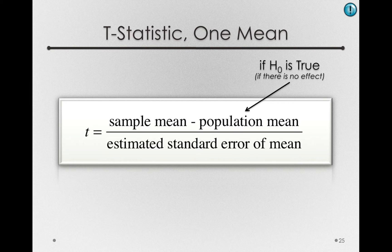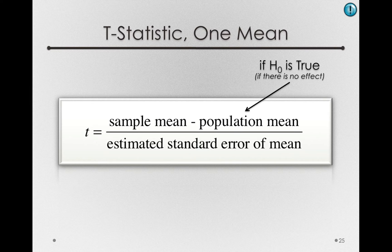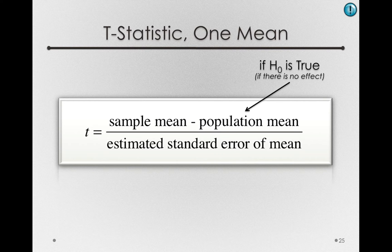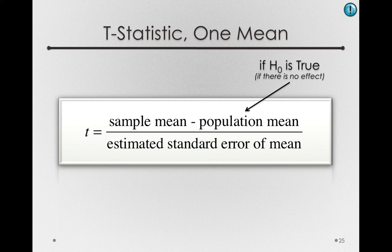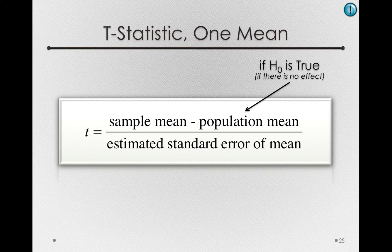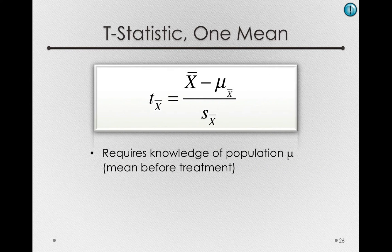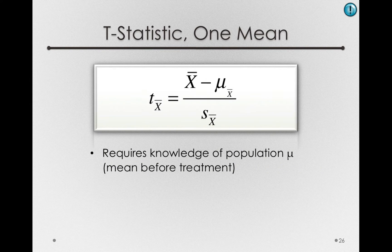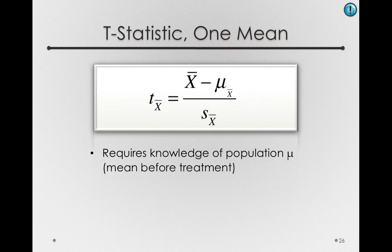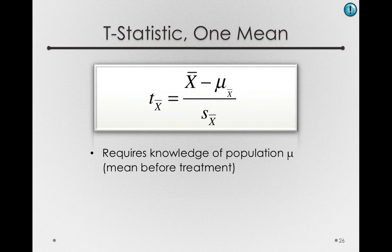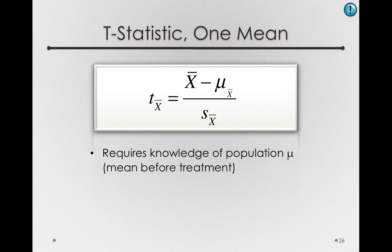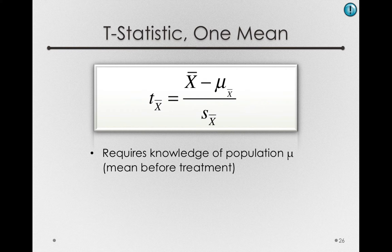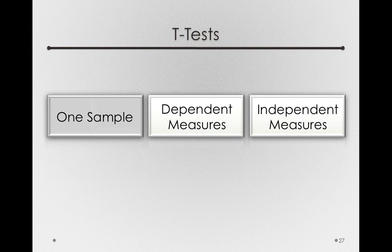This will limit our t-test to only certain scenarios, but as we move forward, we'll see how we can revise our t-statistic to not have to know the population mean before treatment. If I fill this in with our statistics, we'll see our t-sub-x-bar, that is, our sample mean minus the population mean before treatment, or more formally, the mean of the sampling distribution of means assuming the null hypothesis is true, divided by the estimated standard error. That's our one sample t-test.